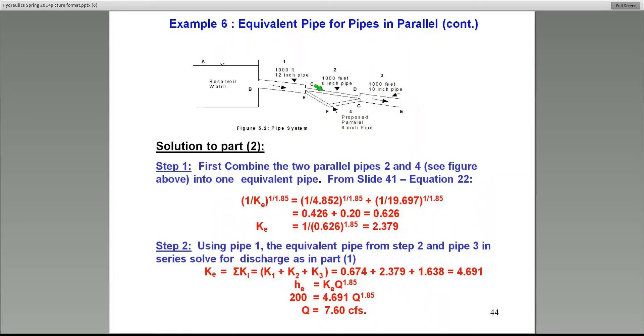And pipe number three are in series. So we sum all their K values, and the total K equivalent of the entire system, in this case, is 4.691. And therefore, the Q can easily be obtained as 7.6 CFS.